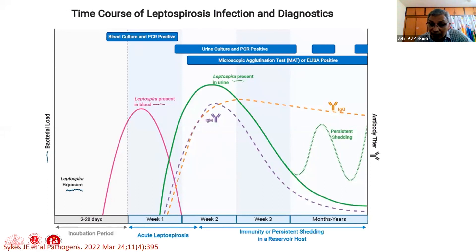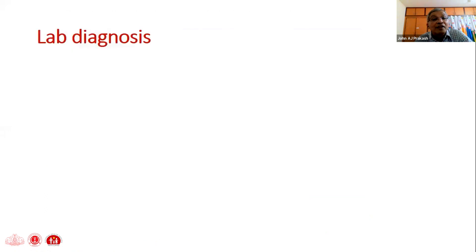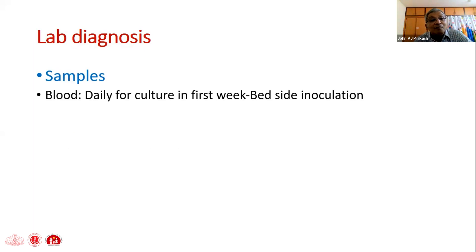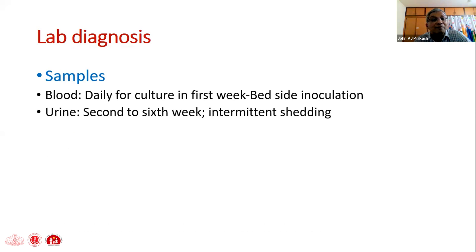Whatever the quality of the lab, the sample makes the difference — garbage in, garbage out. For blood, we can take samples daily for culture in the first week; best is bedside inoculation with one to five drops into five to ten ml of medium. Urine is collected from the second to sixth week, and we must remember that shedding is intermittent, not uniform — both in humans and in animals including the rodent host.